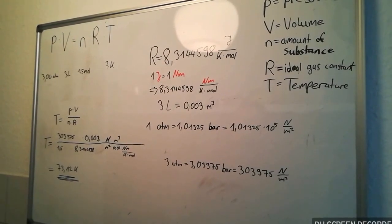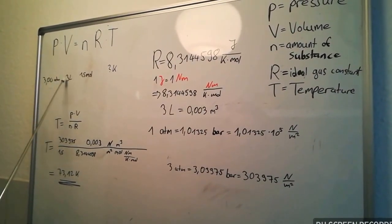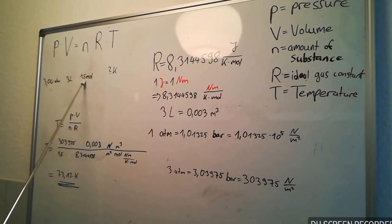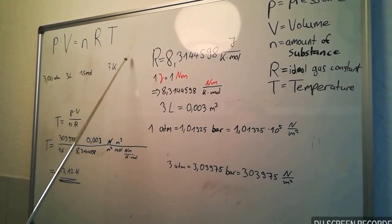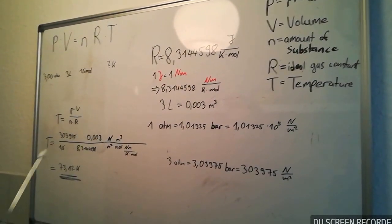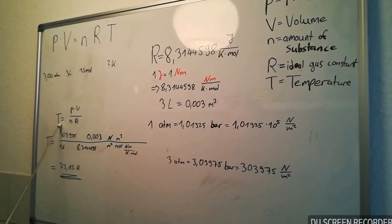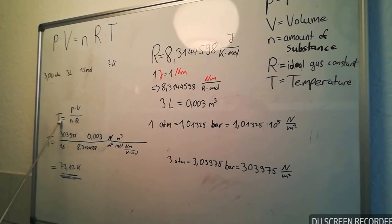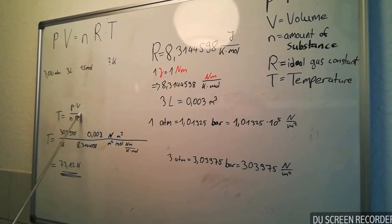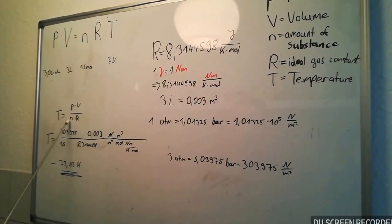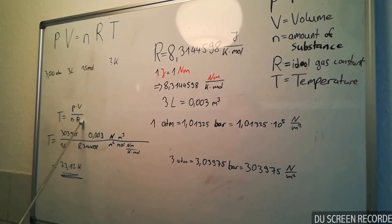The first calculation. We have 3 atm, 3 liter and 1.5 mole, and we want to find out the temperature. So, we rearrange the formula for temperature. The temperature is pressure multiplied with volume divided by the amount of substance and the ideal gas constant.